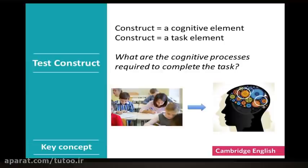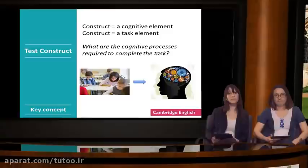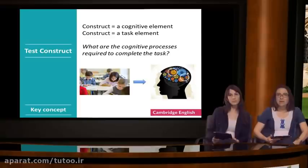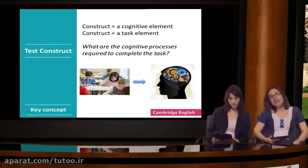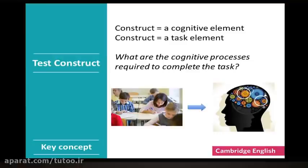The point here is that we don't just randomly put any tasks in a test, but we put tasks in a test because we want them to activate certain cognitive processes. For example, in a face-to-face speaking test, a learner has to both generate ideas and activate their grammatical, lexical knowledge and their pronunciation competence. They also have to pay attention to what the other person is saying and adapt their speech to what the other person has said. These all refer to different cognitive processes in speaking. So in a test, a key question is: what are the cognitive processes required to complete the task?